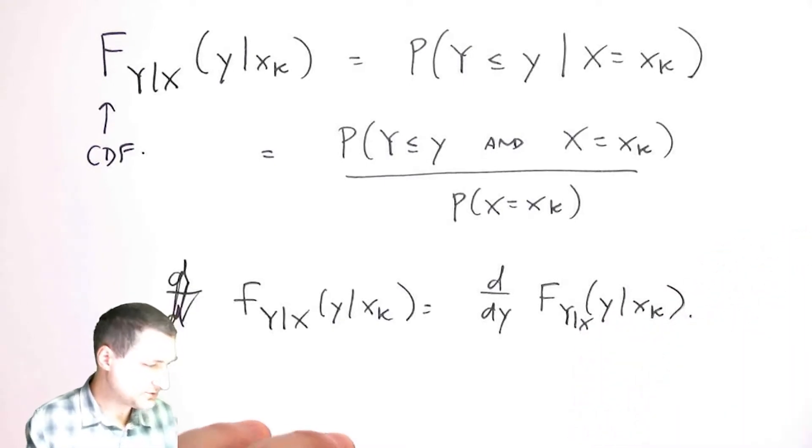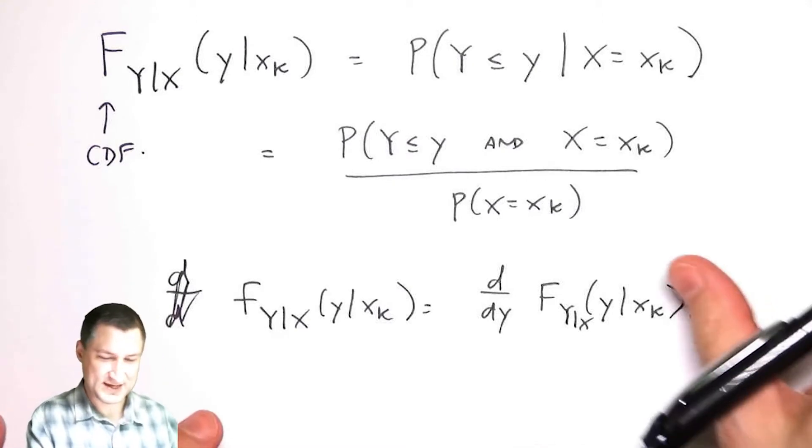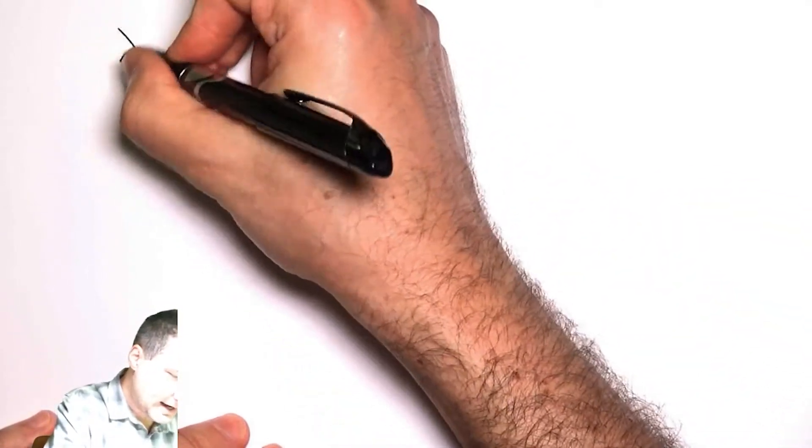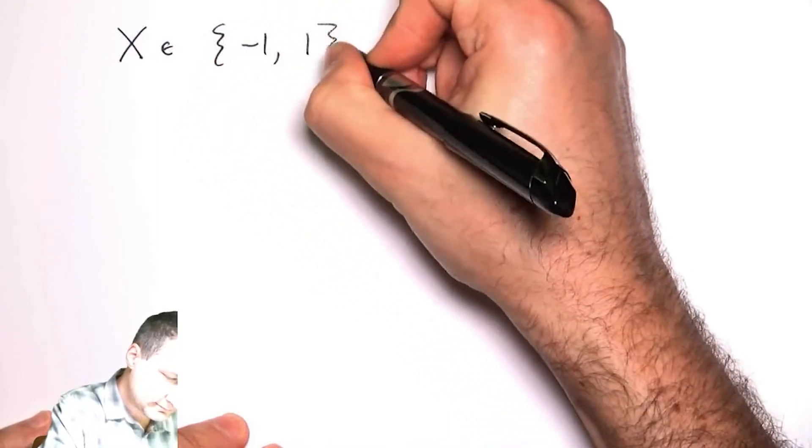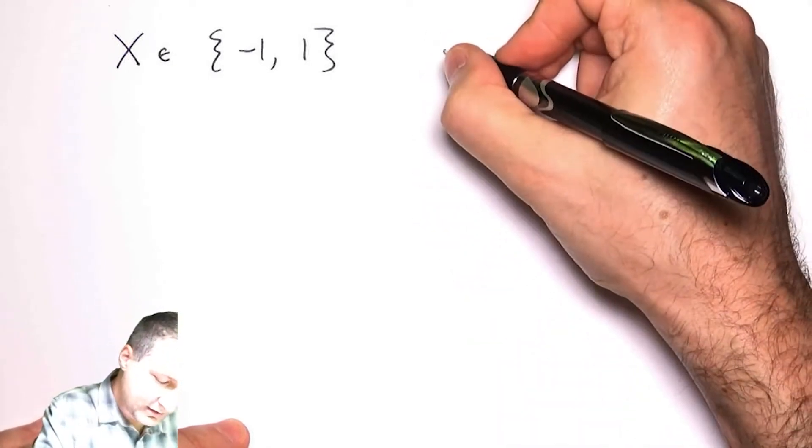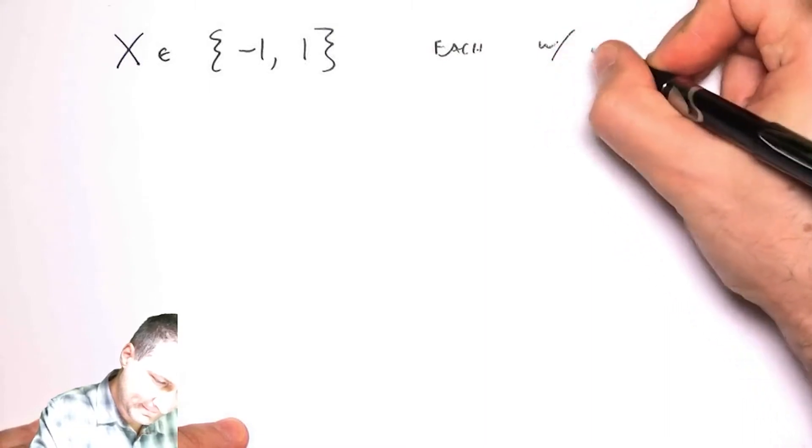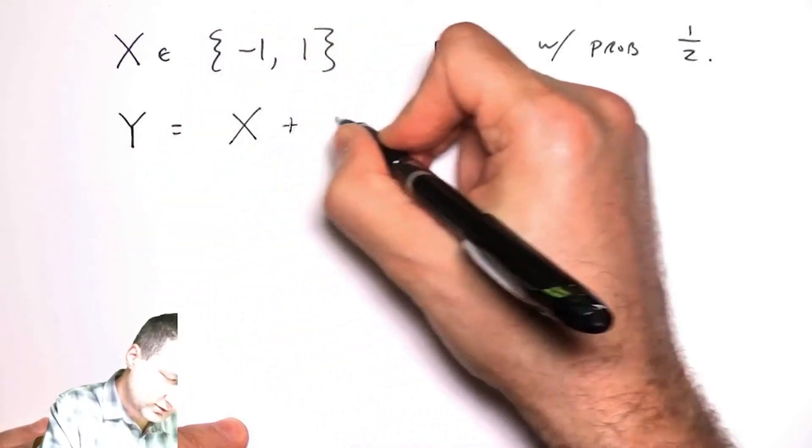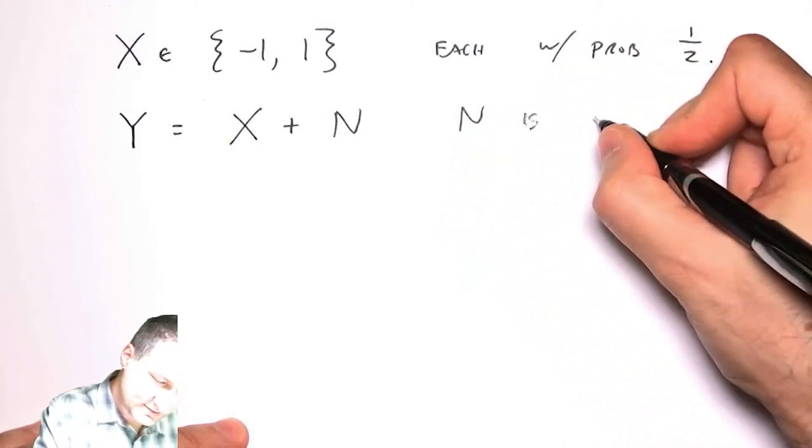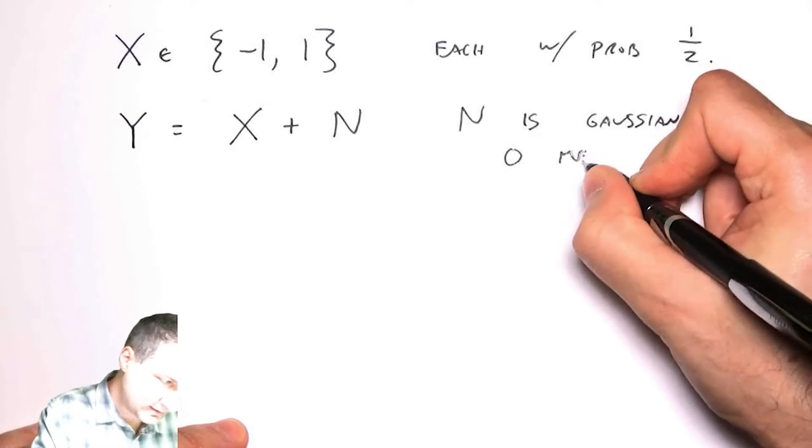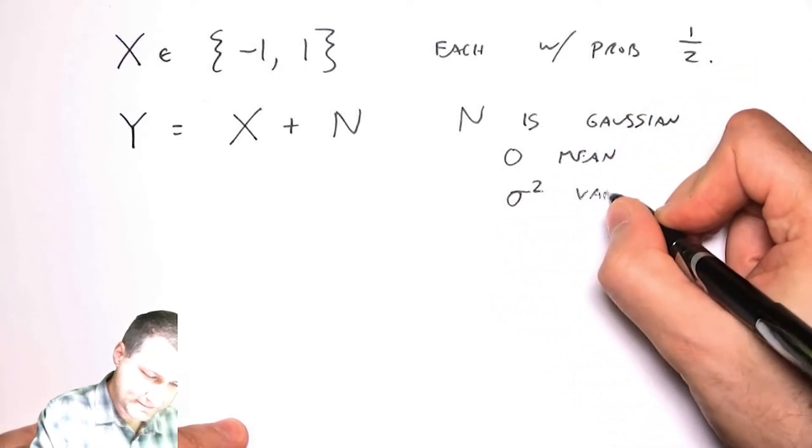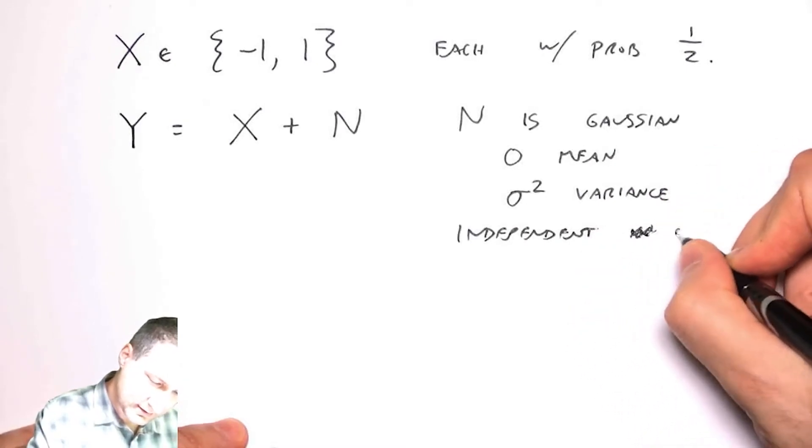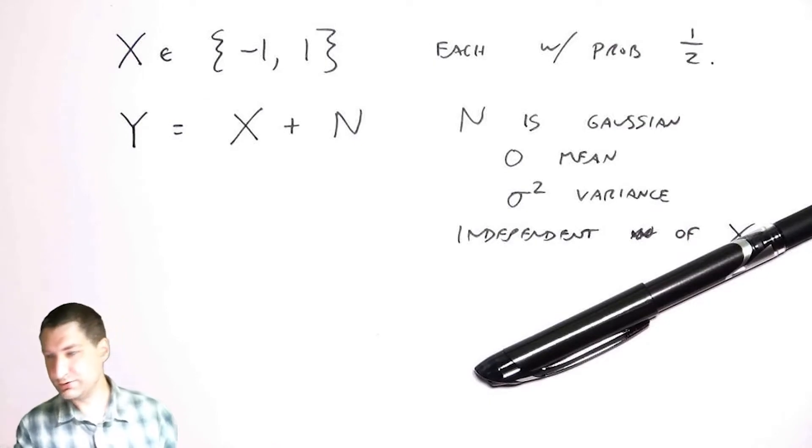Let me do an example to make this concrete. A very common example in electrical engineering is some communications channel with noise. I have, for example, a binary signal, this is what's coming through with probability one half. This is clearly a discrete random variable. And then what I get on the other side is what I sent through the channel plus some noise, where n is Gaussian with zero mean and variance sigma squared. This noise is independent of x.